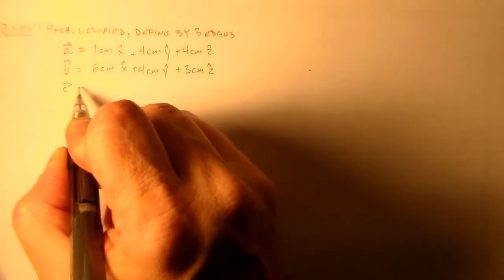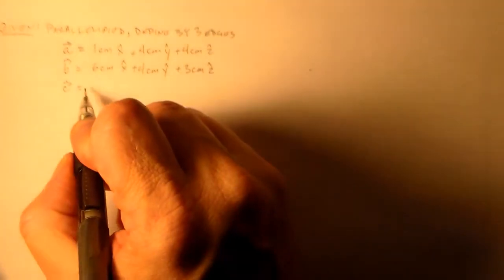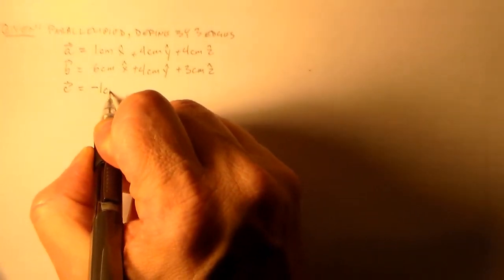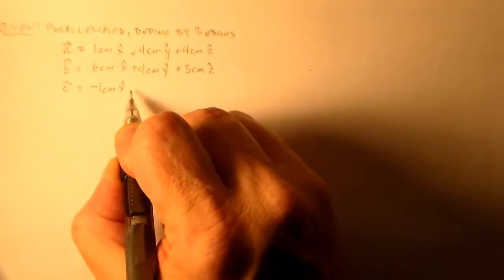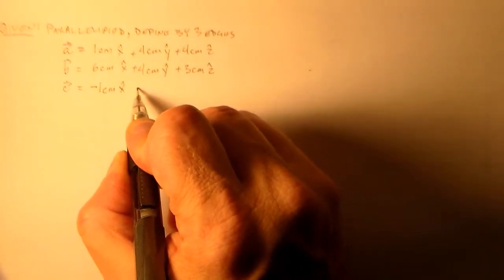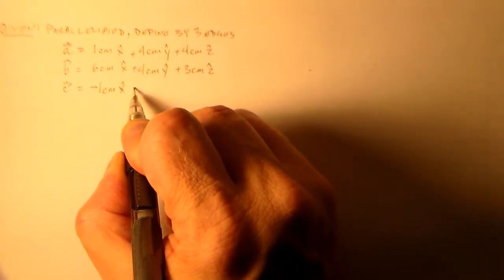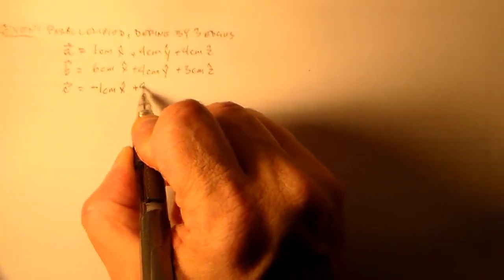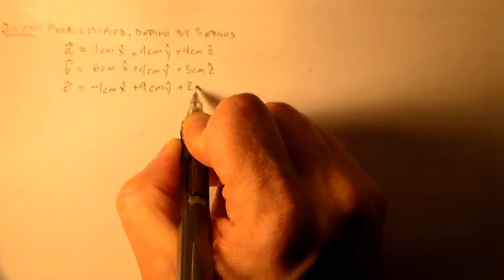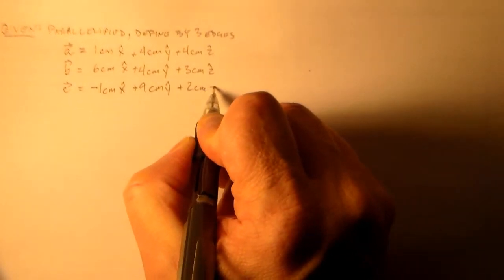And vector C — one more random vector — has minus one centimeter in the x direction, plus nine centimeters in the y direction, and plus two centimeters in the z direction.